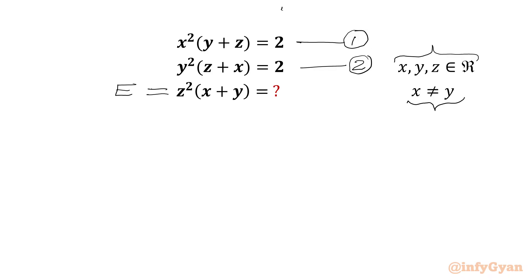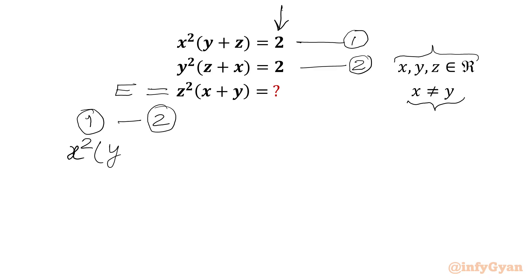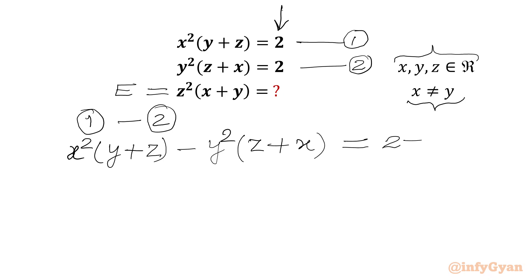Now we have RHS equal to 2 for both equations. So let us subtract the second equation from the first one, so that we get one side equal to 0. We write x squared times y plus z minus y squared times z plus x equal to 2 minus 2.